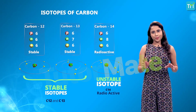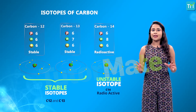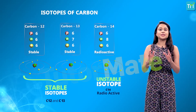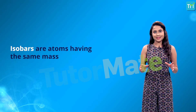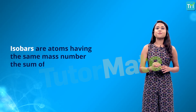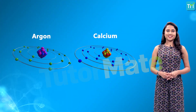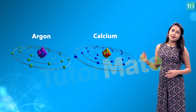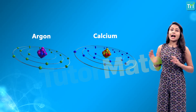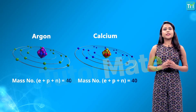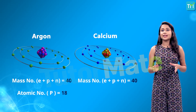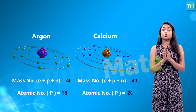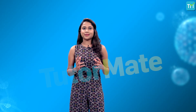Isotopes are of the same element and have the same number of protons. Isobars are atoms having the same mass number — that is, the same sum of protons and neutrons. For example, argon and calcium both have a mass number of 40; however, their atomic numbers are different: argon has an atomic number of 18 and calcium has an atomic number of 20.